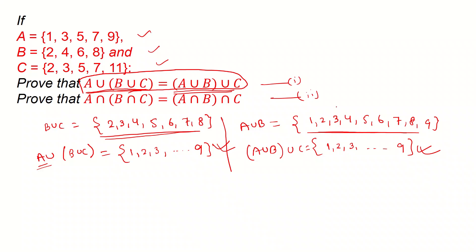I leave the second question as an exercise for you. These results — both associative law results — are not just true for these three sets; they are true for any sets A, B, and C of your choice.